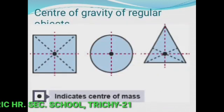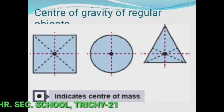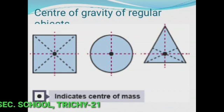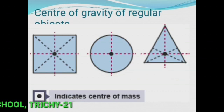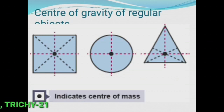Next, center of gravity of regular objects. Objects that have a definite shape are called regular objects — for example, square, circle, triangle. Generally, the center of gravity of geometrically shaped objects lies on the geometric center of the object.